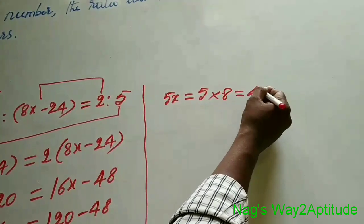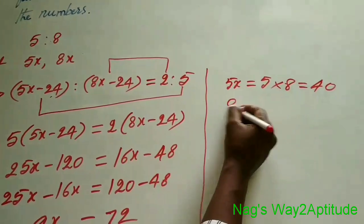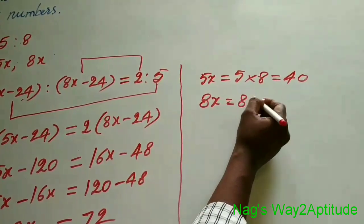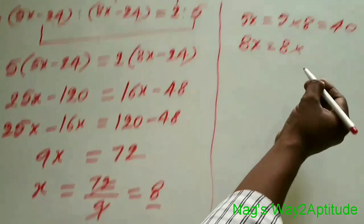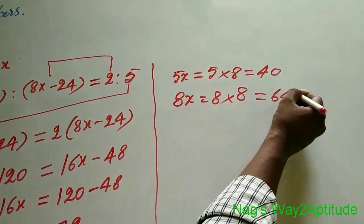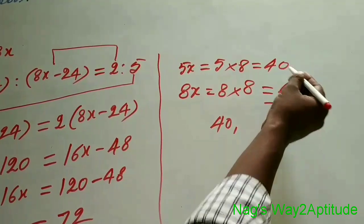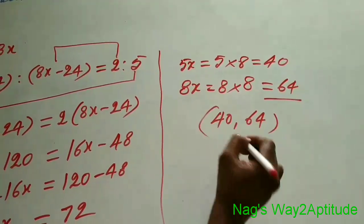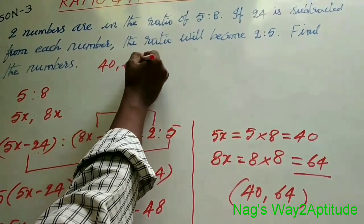Now we need to find the numbers. What are the numbers? 5x and 8x. So, 5x equals 5 into 8, which is 40. And 8x equals 8 into 8, which is 64. So the numbers are 40 and 64.